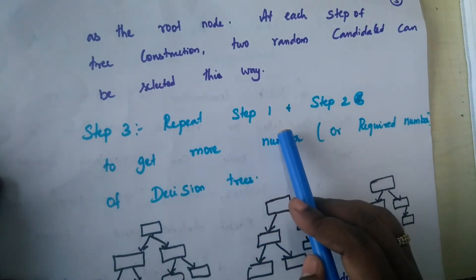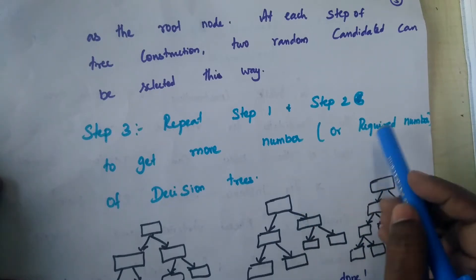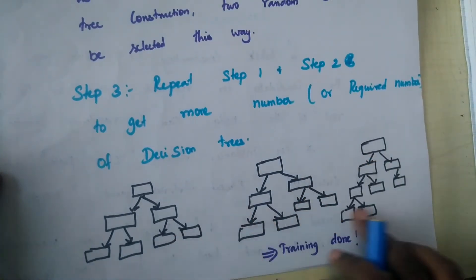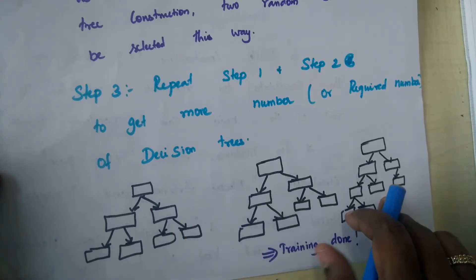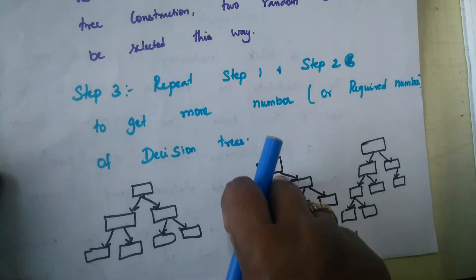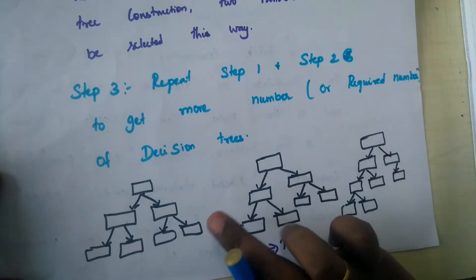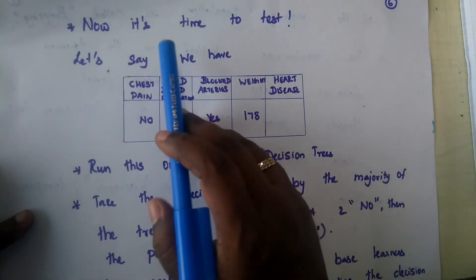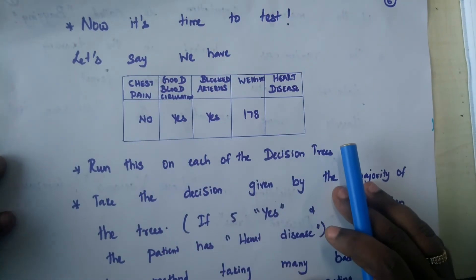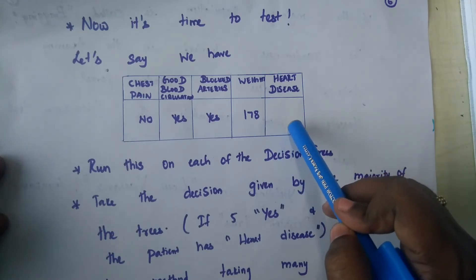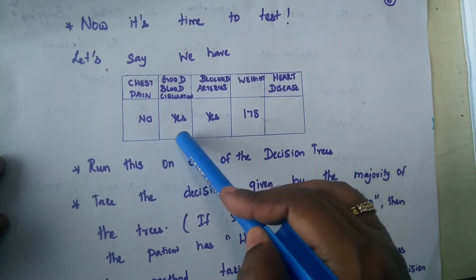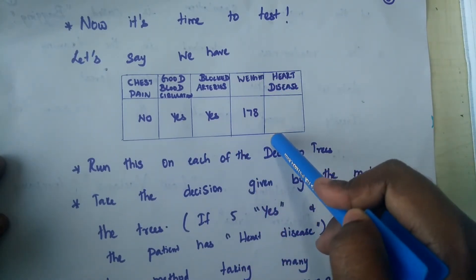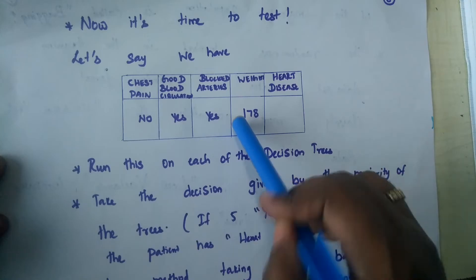Step three is to repeat steps one and two again and again to generate a greater number of decision trees — the desired number we are interested in forming. These trees are built from bootstrapped datasets that are randomly sampled. Our training is over with the construction of decision trees. Now it is time to test. Let's say the test data is: a patient is not having chest pain, is having good blood circulation, is having blocked arteries, and weight is 178. Will he have heart disease or not?